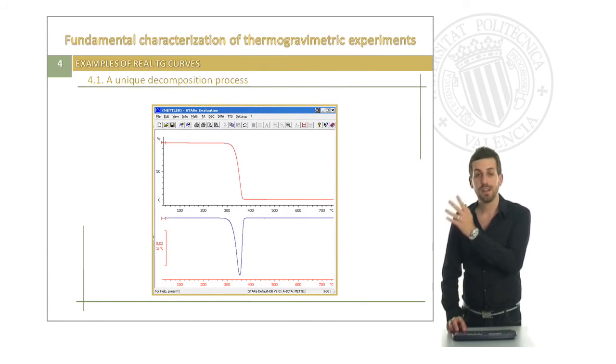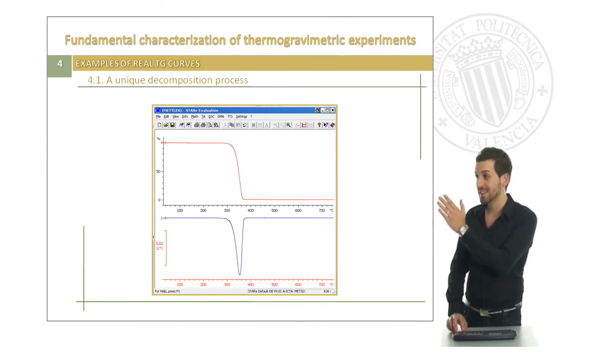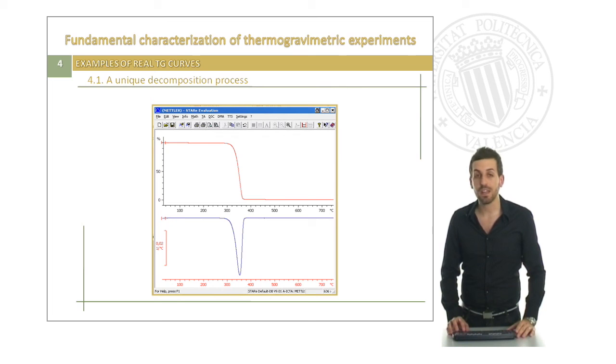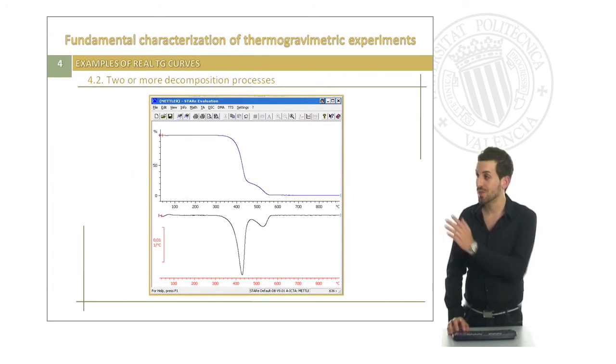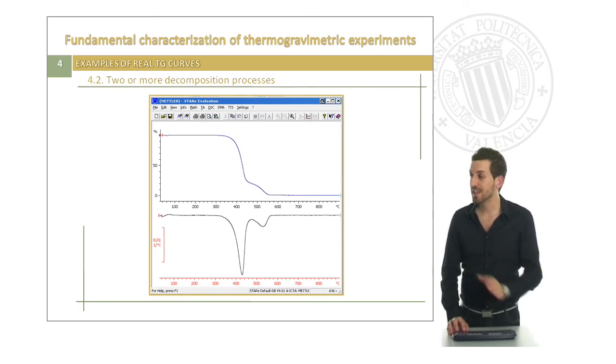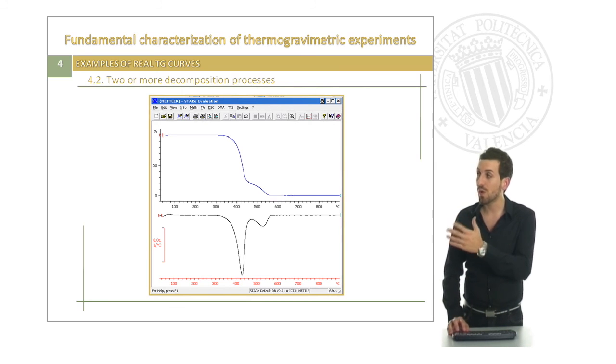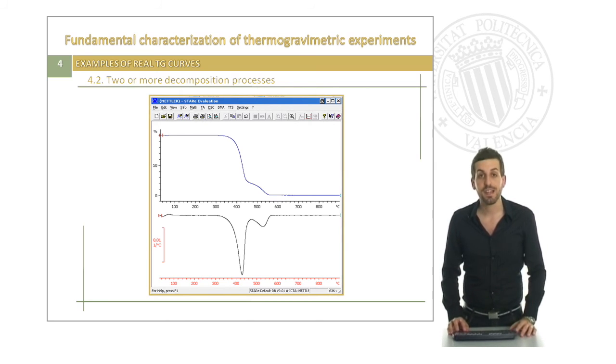And finally, I am going to show you some different real TG curves. The simplest that you can see is this one, in which a unique decomposition process is shown. But it's very common to obtain different TG curves in which two or more decomposition processes can be found.